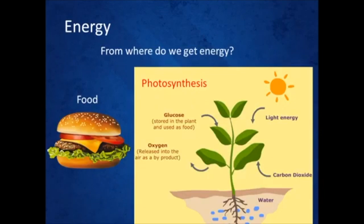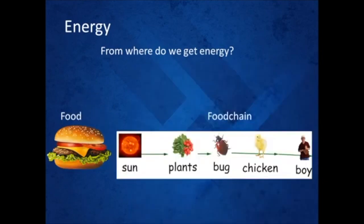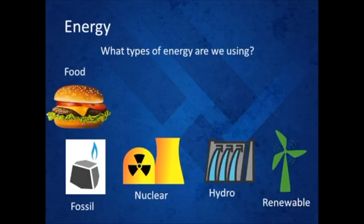Let us move on to the next interesting question. From where do we get the energy we need? Simply speaking, we derive it from the food we eat. We are relying on the energy stored in the food we eat. Plants are storing the energy derived from the sun. All plant eaters are deriving this energy. This allows us to talk about ideas like the food chain and so on. We are not relying on food alone for our energy needs.